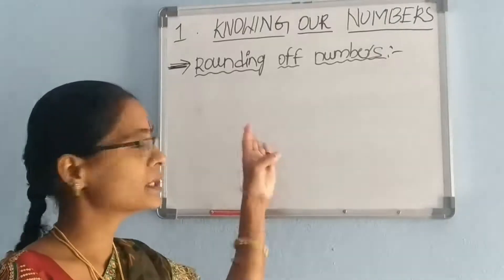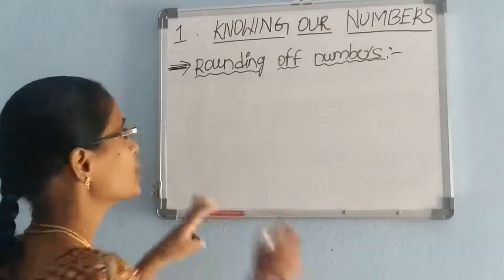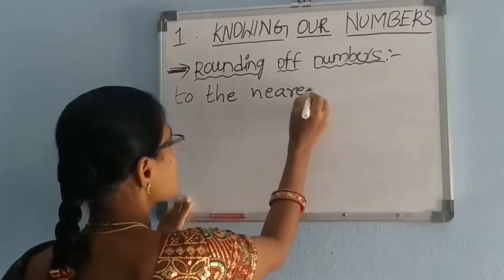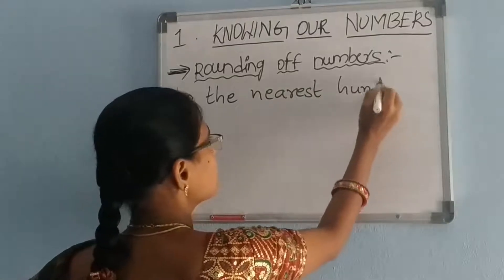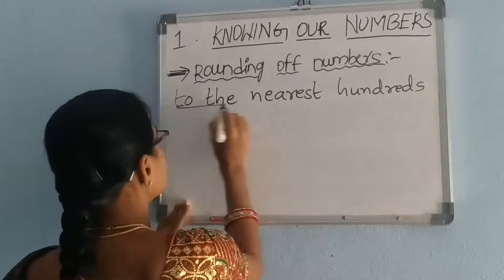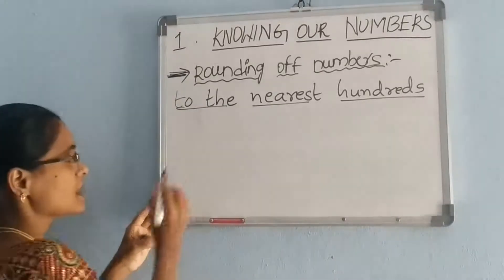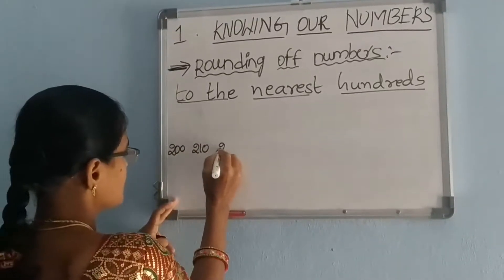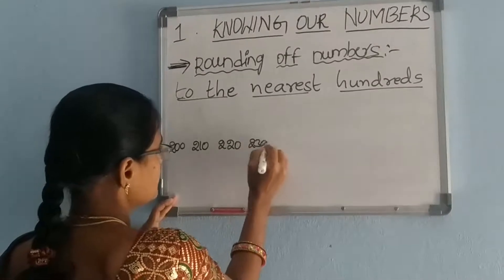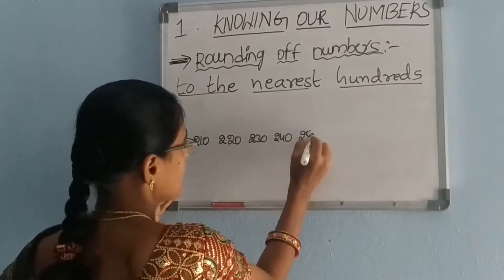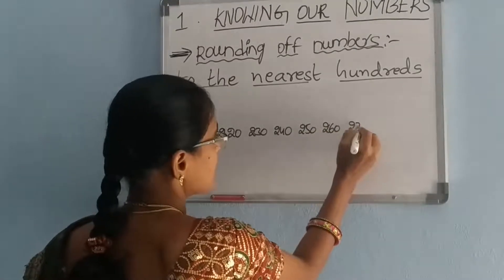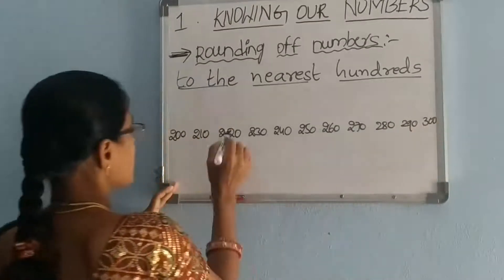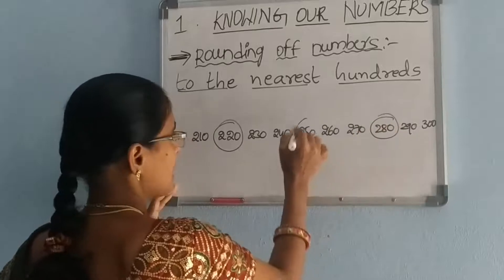Rounding of numbers to the nearest hundreds. We should write 200 to 300: 200, 210, 220, 230, 240, 250, 260, 270, 280, 290, 300. Now round up 220, 280, and 250.